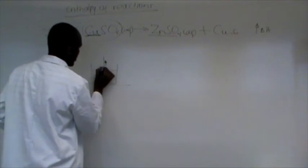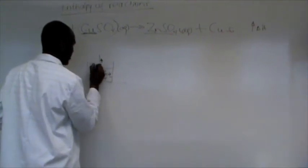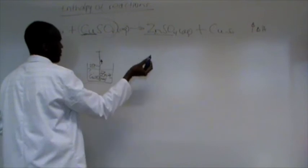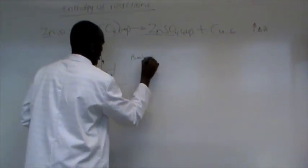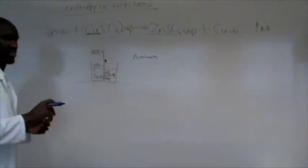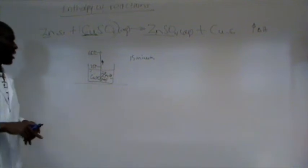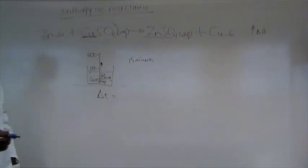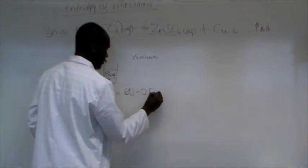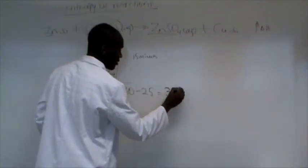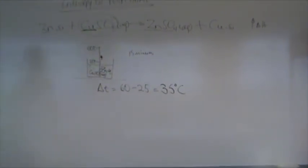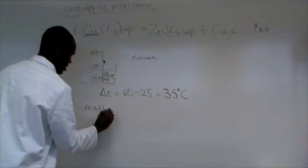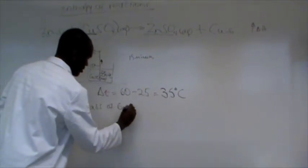Now, at the end of it, assuming we started at maybe something like 25 degrees centigrade at the beginning of the reaction and it shot up, went up after a certain amount of time, probably after about 15 minutes, and went up to about 60 degrees centigrade. Just giving an assumption, an example. What's going to be the change in temperature? 25. Definitely. It's going to be 60 degrees minus 25, which is going to give us 35 degrees Celsius.